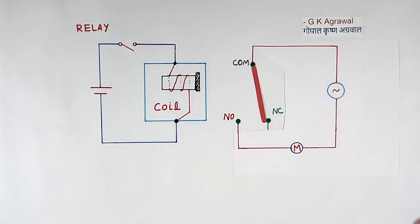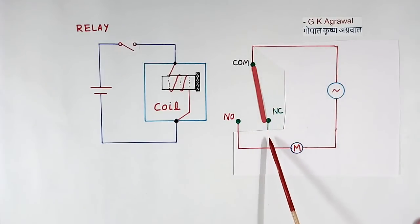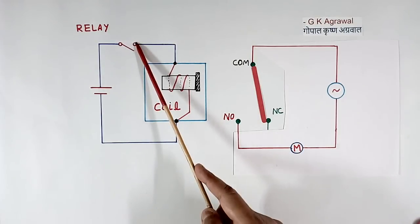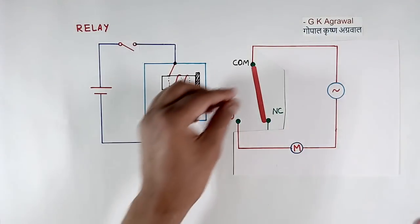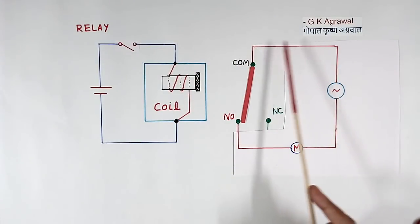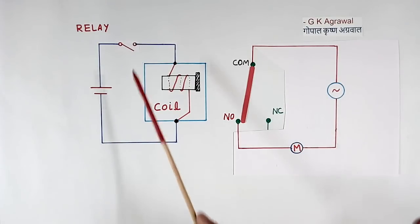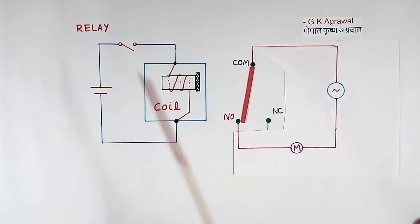Look at this example: we have one motor. When the switch is open, the circuit is open and the motor is not running. Now when we close the switch, the coil energizes, the contact closes, the circuit is complete, and the motor runs. So when the switch is open the motor is off; when the switch is closed the motor runs. This small switch can control a big motor.